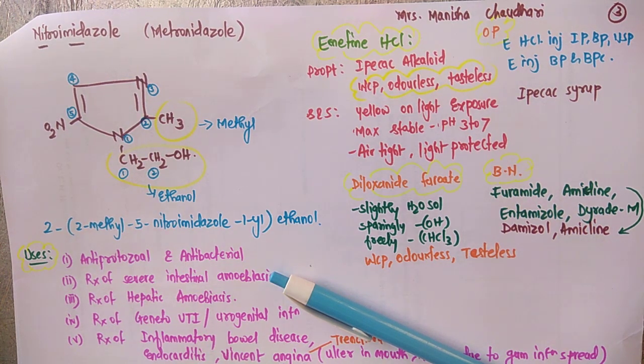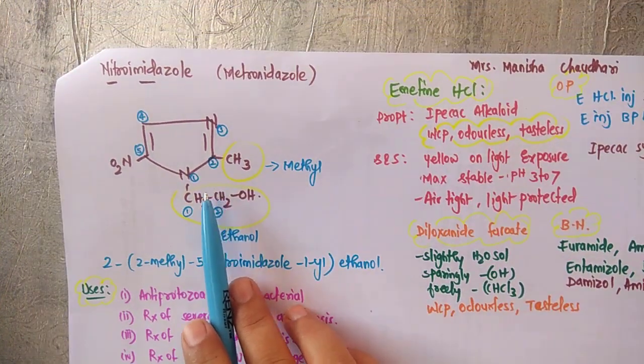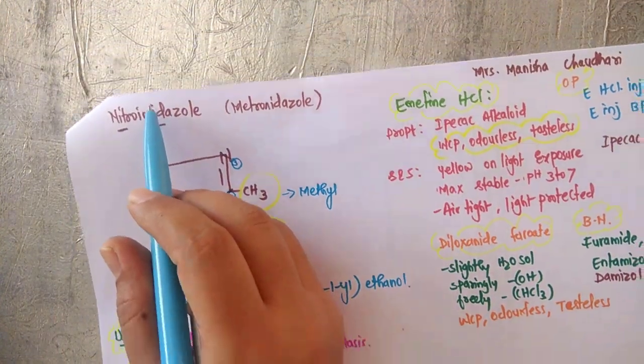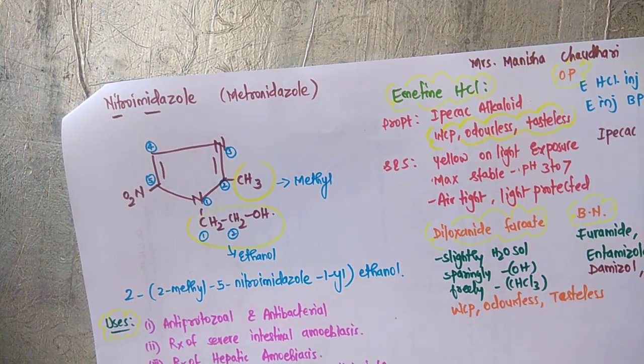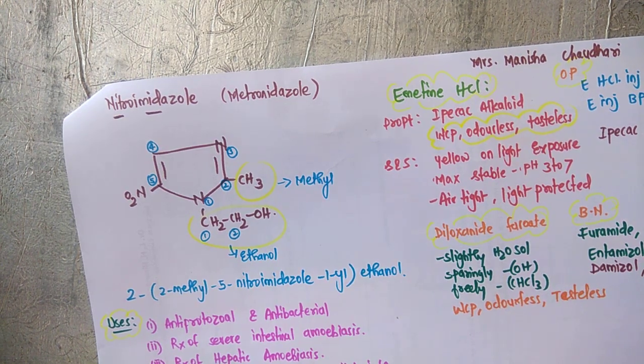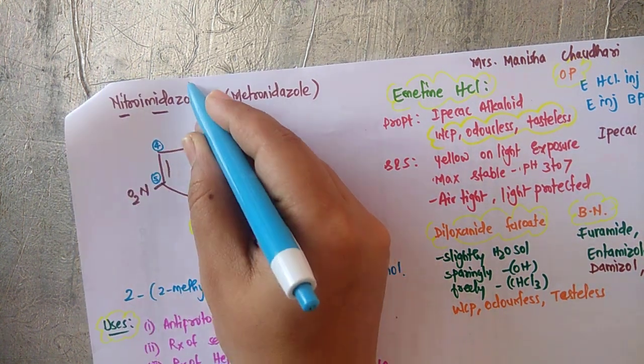First we will see what is nitroimidazole. If you revise our nomenclature lectures on heterocyclic compounds, you will find the structure of imidazole. It is ole, so it is definitely a five-membered ring. Since it is a five-membered ring, the suffix is ole.